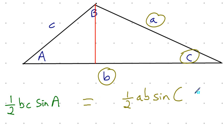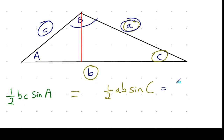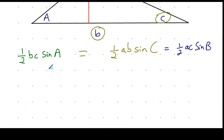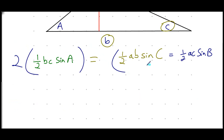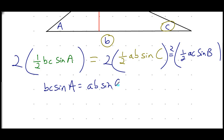Building on that, if given the values of C and A and the angle between them, the area is one half AC times the sine of big B. Since we're dealing with the same triangle, all these values have to be equivalent. Multiplying all three expressions by 2 gives: BC·sin(A) equals AB·sin(C) equals AC·sin(B).